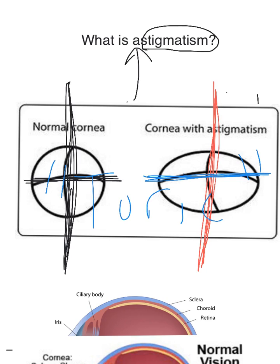Having astigmatism is not a big deal. It's just a refractive error — it just means that you need to wear glasses to see well. Hopefully that helps, and that's it.